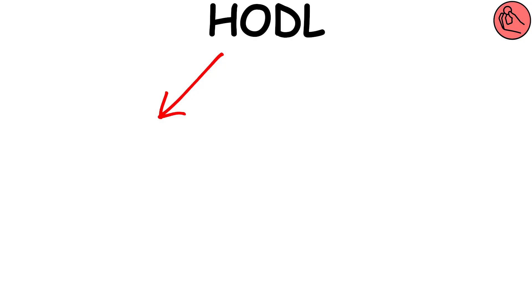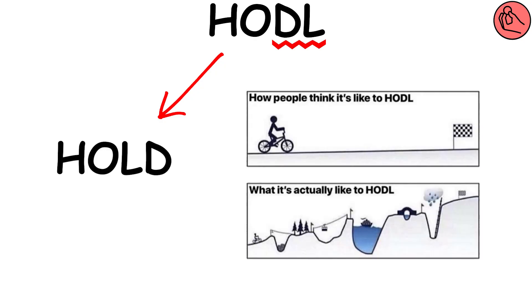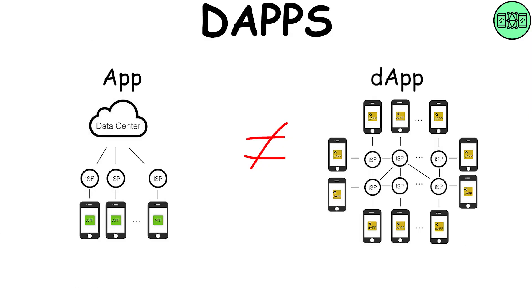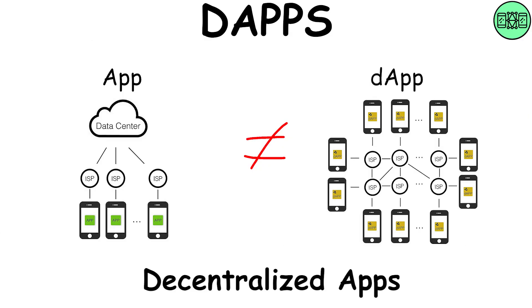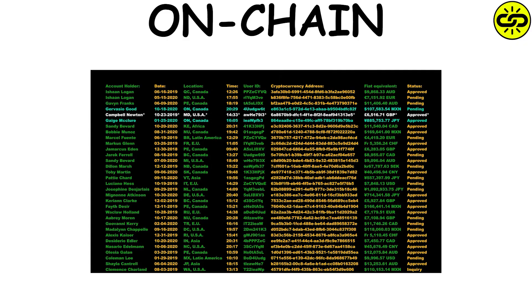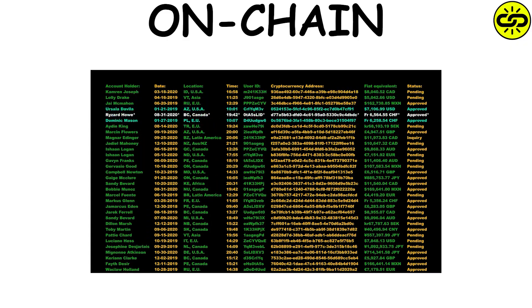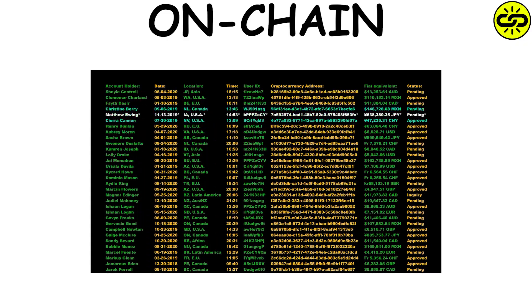HODL: the term comes from misspelling the word hold. It refers to the action of not selling your cryptos. DApps: digital applications that use blockchain technology to keep data decentralized. On-chain: a transaction recorded on a blockchain.